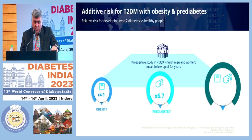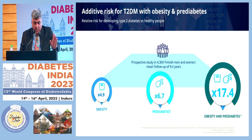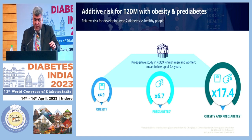There is an additive risk for type 2 diabetes with obesity and pre-diabetes. Patients with obesity have 4.9 times the risk. This is from a prospective study of about 4,369 Finnish men and women with a mean follow-up of 9.4 years. Those with pre-diabetes had 6.7 times the progression risk, and those with both obesity and pre-diabetes had 17.4 times higher risk of progressing to diabetes.